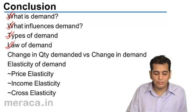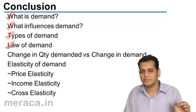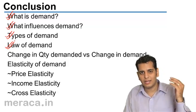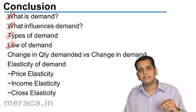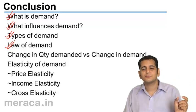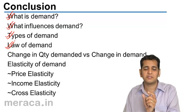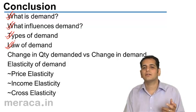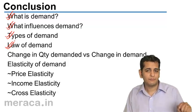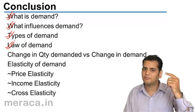Then we did the law of demand. The law of demand states, ceteris paribus, the quantity demanded of a good will rise with a fall in price, and the quantity demanded of a good will fall with a rise in price. Ceteris paribus means all other factors remaining constant. So the key factor considered here is price — with a rise in price, demand falls; with a fall in price, demand rises.